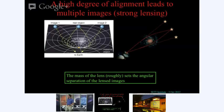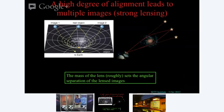This cartoon shows it in a cartoony way. Light coming from a distant object goes around the left side being bent, around the right side being bent. Those rays come into the observer, and the observer sees two images of the background object.